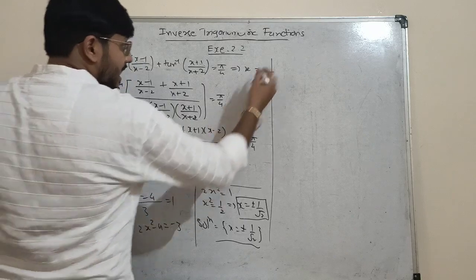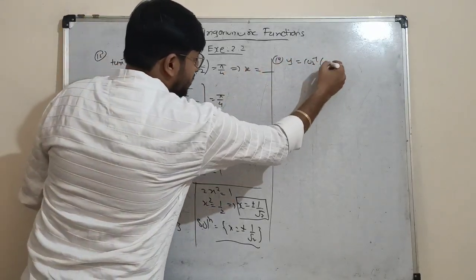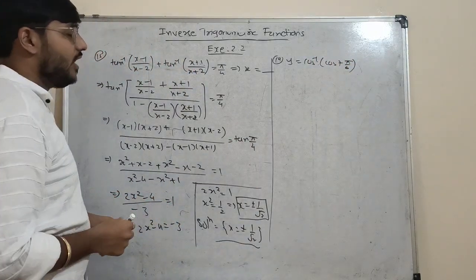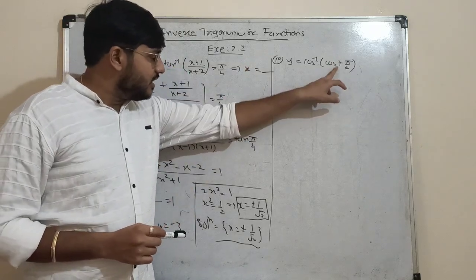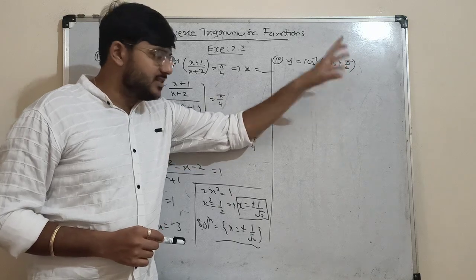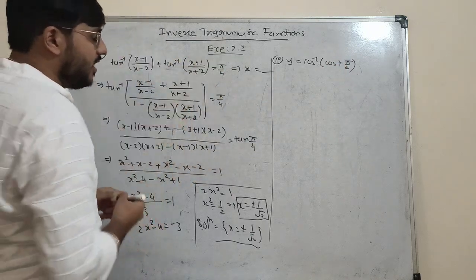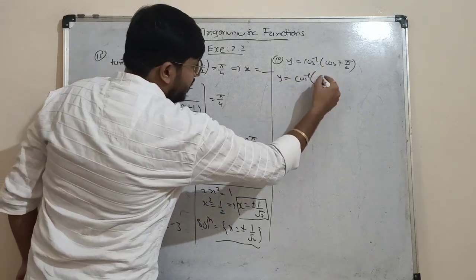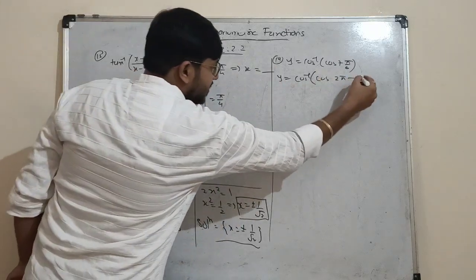Number 19: y = cos⁻¹(cos(7π/6)). Since 7π/6 does not belong to the domain [0, π], we must convert it. Write 7π/6 as 2π - 5π/6, since 2π - 5π/6 = 7π/6.